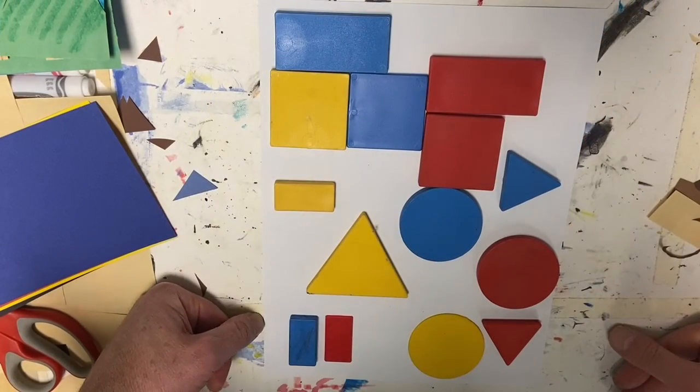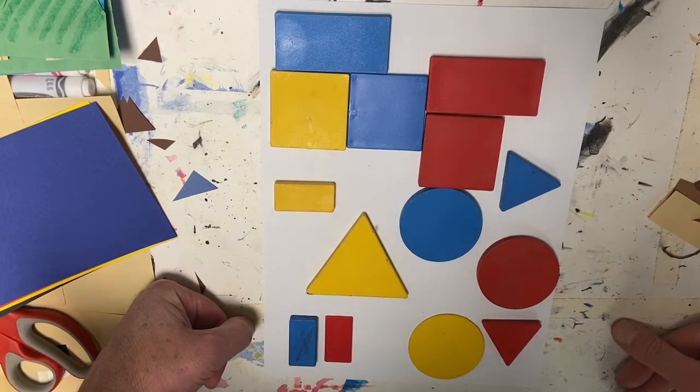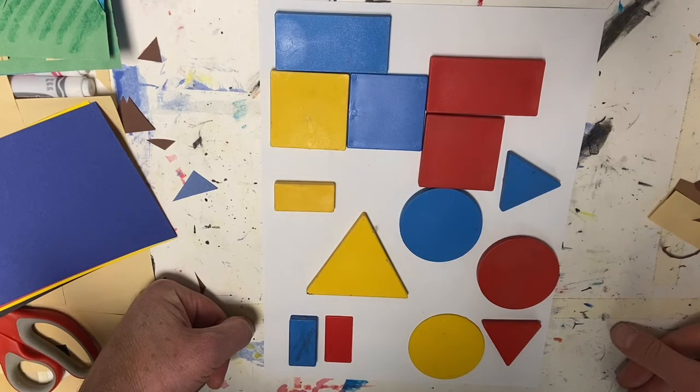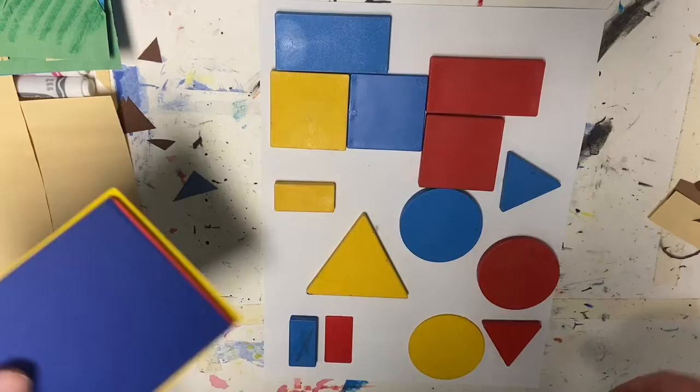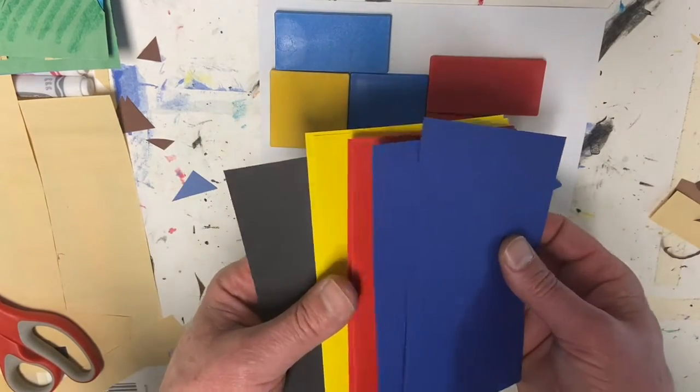Today we're cutting circles, squares, triangles, and rectangles in primary colors and maybe even black. I have those colors together right here. These are quarter sheets of paper.